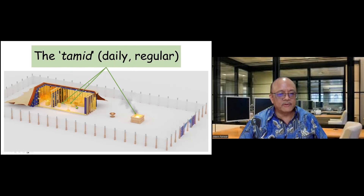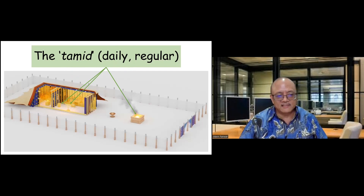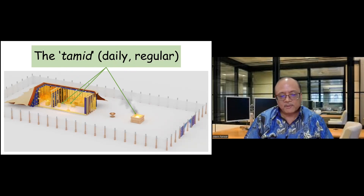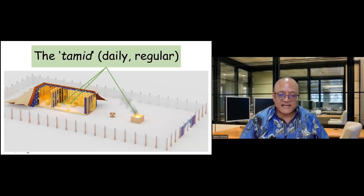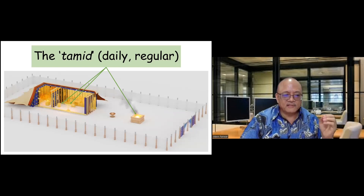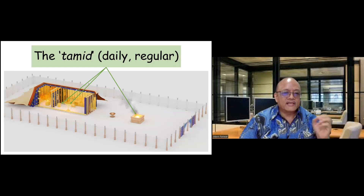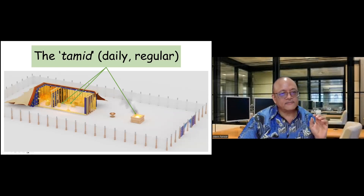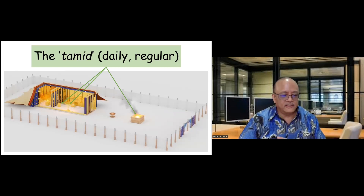The table of bread was only once a week, and the Ark of the Covenant only once a year. The basin was used as needed. The burnt offering had to be offered every morning and every evening. The lamps had to be oiled and refreshed every morning and evening. The incense had to be offered every morning and evening. These three activities were tamid — they happened every single day of the year, even on festival days, even on Shabbat. These three things never stopped.